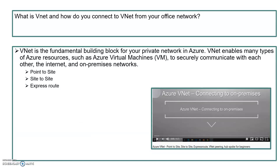The next question is: what is VNet and how do you connect to VNet from your office network? Private cloud is very important in cloud space. When you create VMs exposed to the public domain via public IPs, security is reduced and costs are higher. Instead, you can build a private cloud using Azure VNet, which is the fundamental building block for your private network in Azure. VNet enables Azure resources such as virtual machines to securely communicate with each other, the internet, and on-premises networks. There are multiple ways to connect: point-to-site, site-to-site, and ExpressRoute. I have made another video on connecting Azure VNet to on-premises.